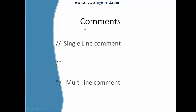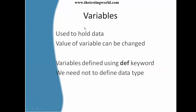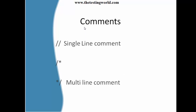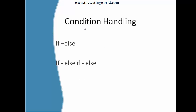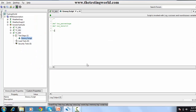Moving back to the slides — we have covered what a variable is and how to create a variable in Groovy, and also single-line and multi-line comments. Moving to condition handling — we can use if-else, or if-else-if and then else. First we are going to cover if-else, and then if-else-if. If we have multiple conditions, we can use multiple else-if blocks and at the end an else.